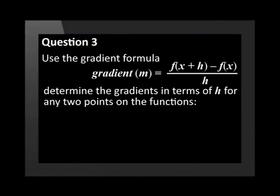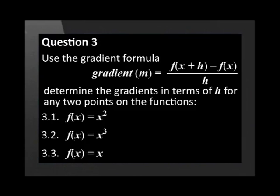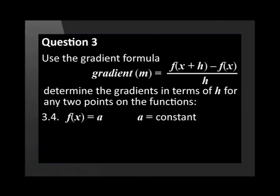Use the gradient formula m equal to f brackets x plus h minus f of x over h to determine the gradients in terms of h for any two points on the functions: f of x equals x squared, f of x equals x cubed, f of x equals x, f of x equals a where a is a constant.